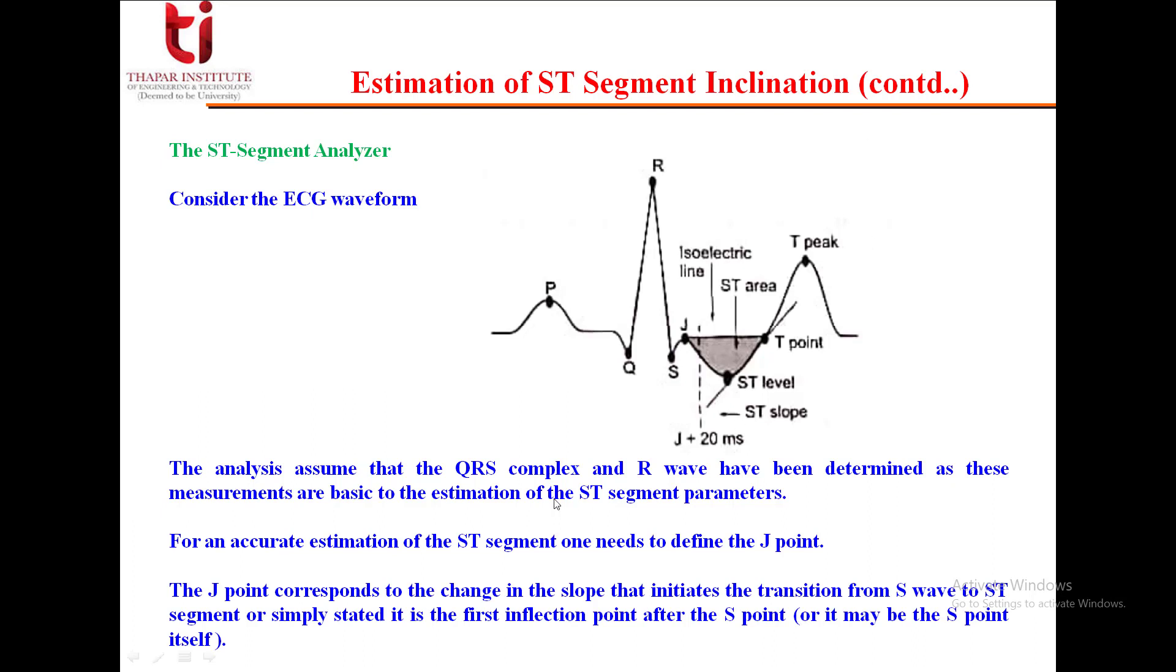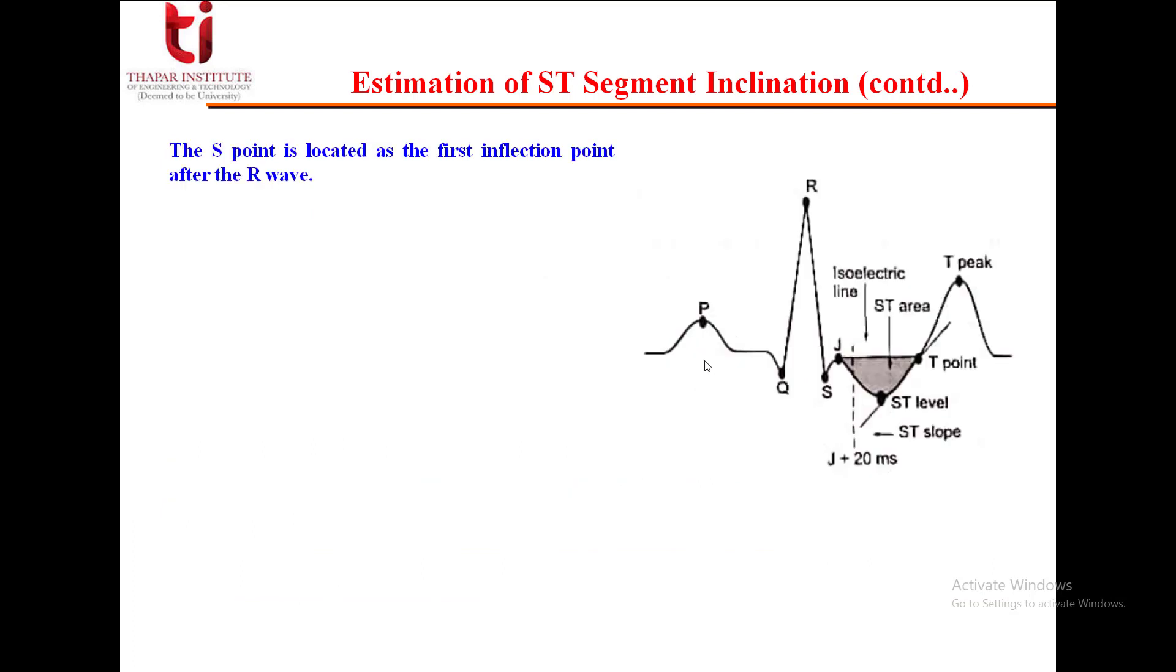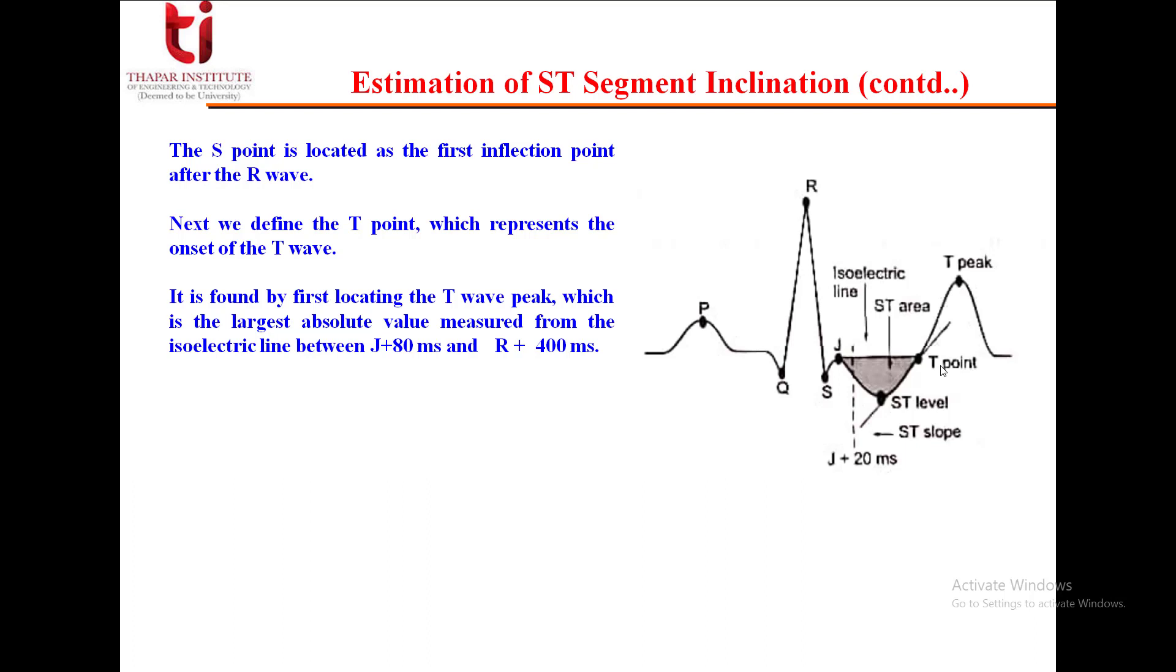You can see here, positive to negative slope is going on. That initiates the transition from S wave to ST segment, or simply stated, it is the first inflection point after the S point, or it may be the S point itself. The S point is located as the first inflection point after the R wave. Next, we define the T point, which represents the onset of T wave. It is found by first locating the T wave peak, the largest absolute value measured from the isoelectric line between J plus 80 ms and R plus 400 ms.